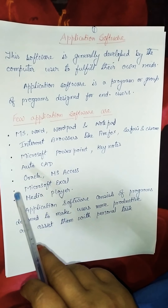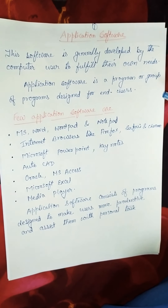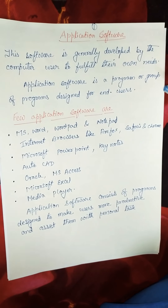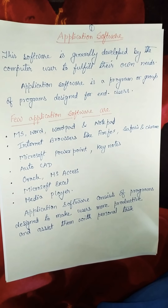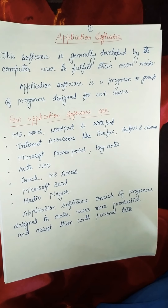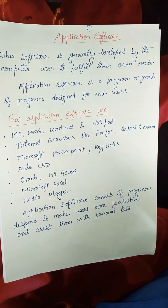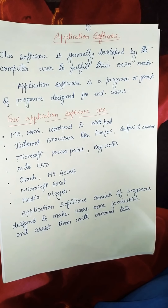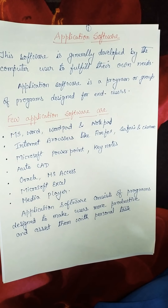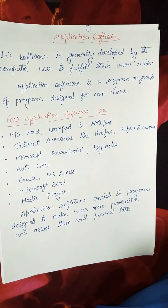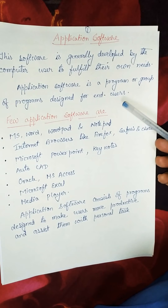Application software is generally developed by the computer user to fulfill their own needs. For example, banks use their own application software built by their own programmers to fulfill their needs. Similarly, Indian Railways uses its own application software. Application software is a program or group of programs designed for end users.